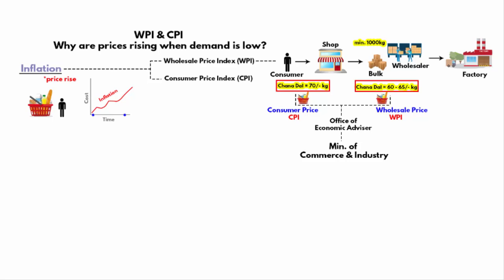Inflation means a rise in the prices of goods and services that we use on a daily basis. When prices increase, the purchasing power of a consumer decreases. For example, if you could buy two commodities for 10 rupees, when prices increase, you will only be able to buy one item with the same amount. Inflation is therefore indicative of a decrease in purchasing power.